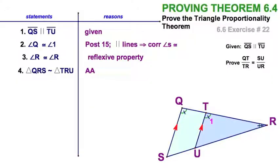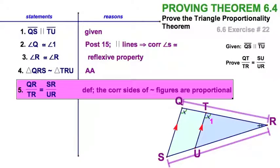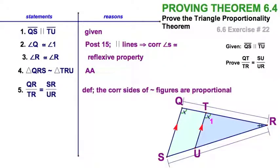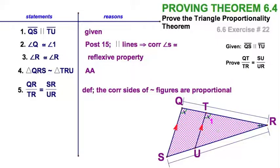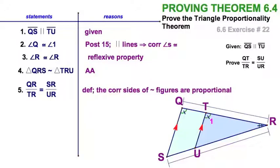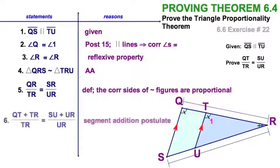And one of the properties of similar triangles, ready for this? Oh yes. Oh yes. There's the definition. Their corresponding sides are proportional. Now the corresponding sides, remember. So I've got QR is to TR as SR is to UR. Because after all, it's this triangle and this triangle. Okay. So you've got that.